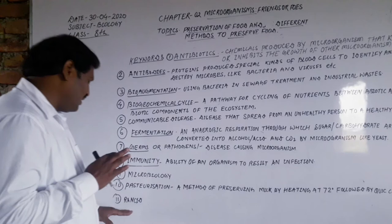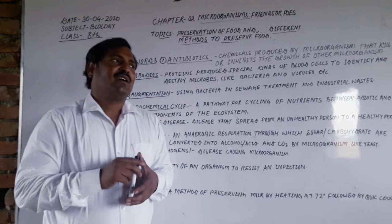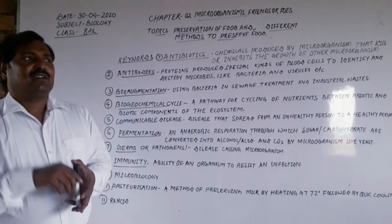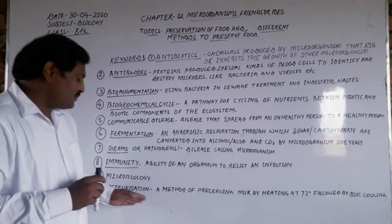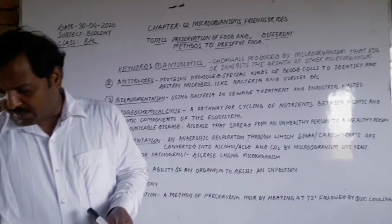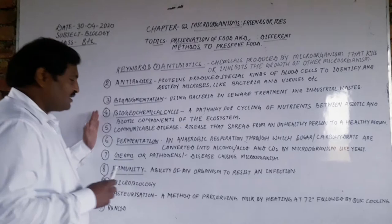Rancid — when any fatty food is exposed to air, some microorganisms develop inside it. They start releasing toxins and decomposing the food, and the flavor and taste of the food change to sour. This is called rancid, and the process is known as rancidity.